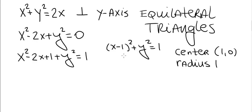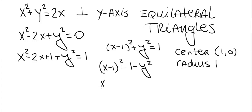We need to solve for x in terms of y to get equations for the left and right semicircles. x minus 1 squared equals 1 minus y squared, so x minus 1 equals plus or minus the square root of 1 minus y squared, giving x equals 1 plus or minus the square root of 1 minus y squared. The minus case is the left semicircle; the plus case is the right semicircle.